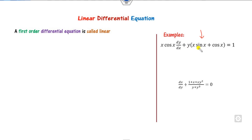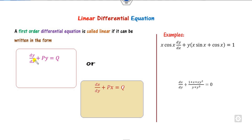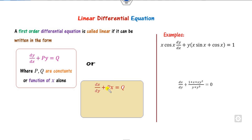Look at these two differential equations — whether they are linear or not. How can you say any differential equation is linear? A first order differential equation is said to be linear when it is in either of these two forms. Here x is the independent variable and y is the dependent variable, and in the reverse form y is the independent variable.